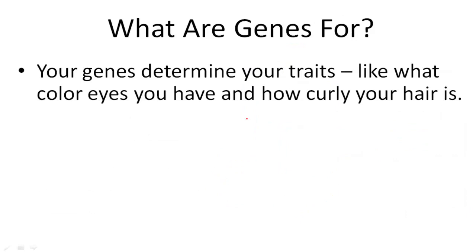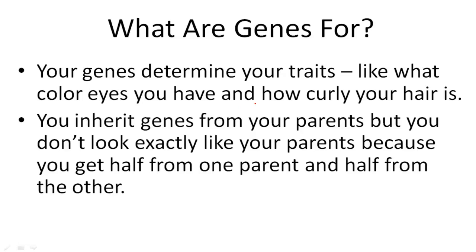Your genes determine your traits — what color your eyes are, how curly your hair is. And you get these genes from your parents. But you don't look exactly like your parents because you get half from one parent and half from the other. So maybe you have curly hair just like your mom because her curly hair was more dominant. But maybe your eyes are brown like your dad.